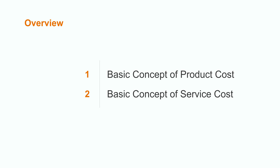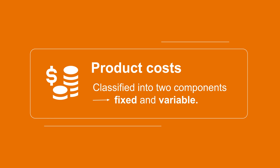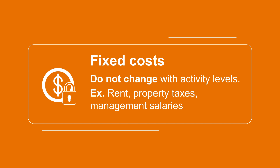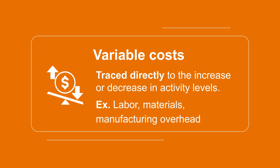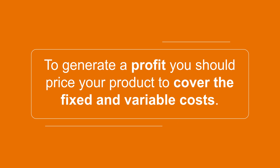So what is product cost and service cost? Product costs are generally classified into two components: fixed and variable. Fixed costs are costs that do not change with the activity level — for example, rent, property taxes, management salaries, etc. Variable costs, on the other hand, can be traced directly to the increase or decrease in the activity level — for example, direct labor, direct materials, manufacturing overheads, etc.